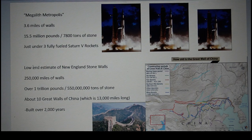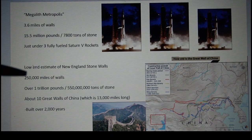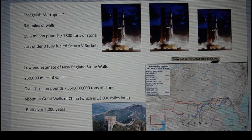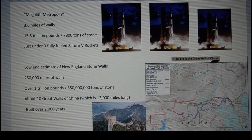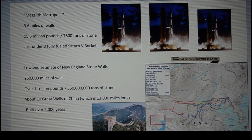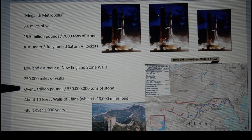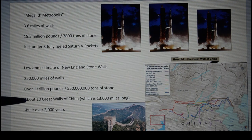The most common estimate is that there's a quarter million miles worth of stone walls in New England, based on a 1930s federal study derived from a late 1800s estimate — done before satellite imagery, so it's very conservative. Using a small-size estimate on the granite calculator, that's over a trillion pounds of stone, or 550 million tons, which equals about 10 Great Walls of China in total stone weight.